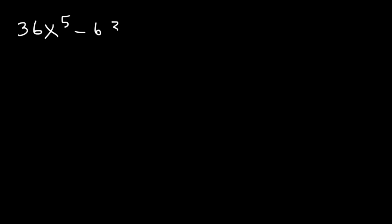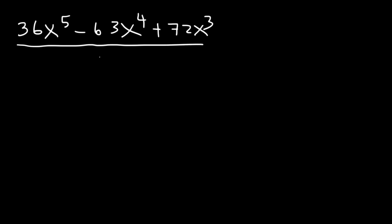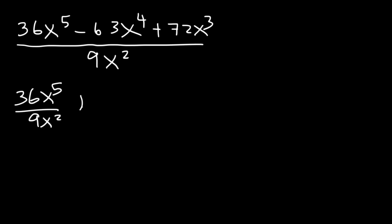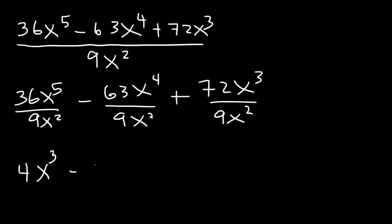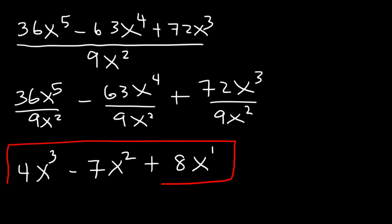Let's try one more: 36x to the 5th minus 63x to the 4th plus 72x cubed divided by 9x squared. Divide every term by 9x squared: 36 divided by 9 is 4 and 5 minus 2 is 3, giving 4x cubed. 63 divided by 9 is 7 and 4 minus 2 is 2, giving 7x squared. 72 divided by 9 is 8 and 3 minus 2 is 1, giving 8x. So the answer is 4x cubed minus 7x squared plus 8x.